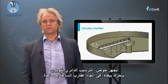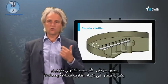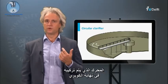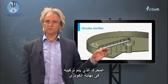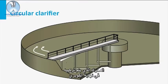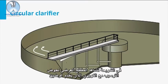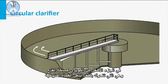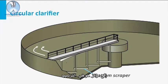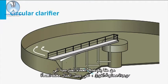A circular clarifier is equipped with a bridge that moves slowly clockwise with the help of a motor, which is mounted at the extremity of the bridge. You see a cross-section of the clarifier with the bridge serving two purposes. At the lower part of the bridge, a bottom scraper is mounted that gently moves the settled solids to the central core of the clarifier. From here, the settled sludge is pumped to another treatment device, for instance, a sludge thickener.